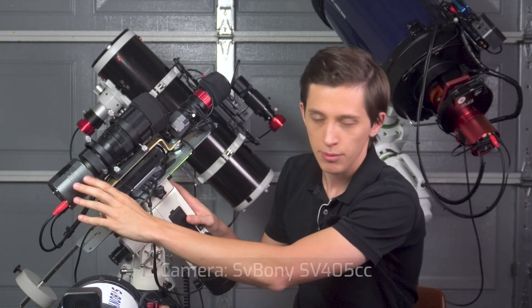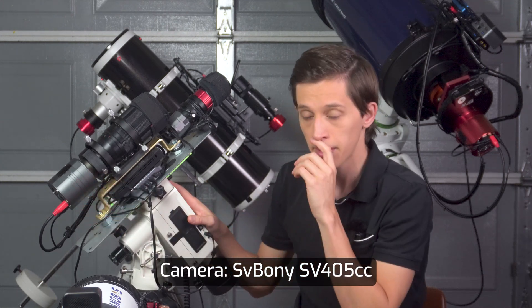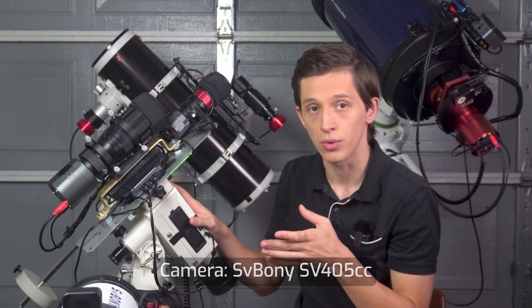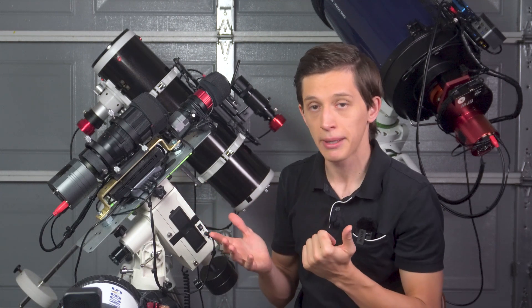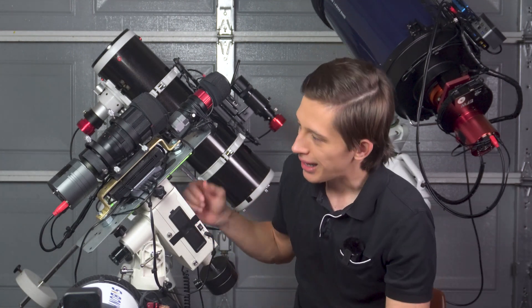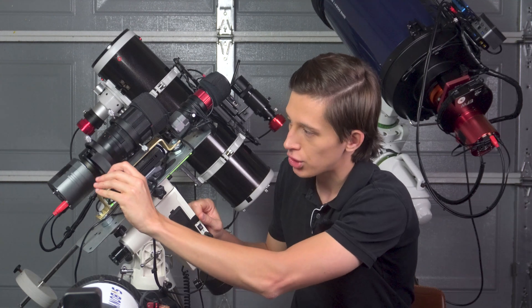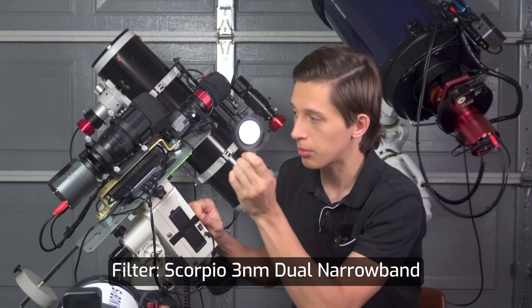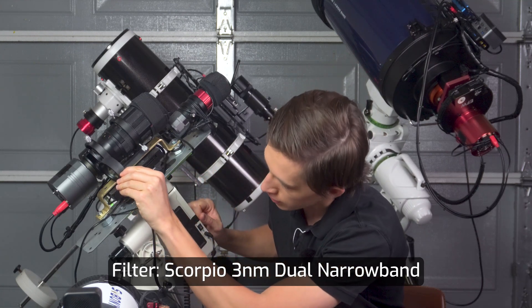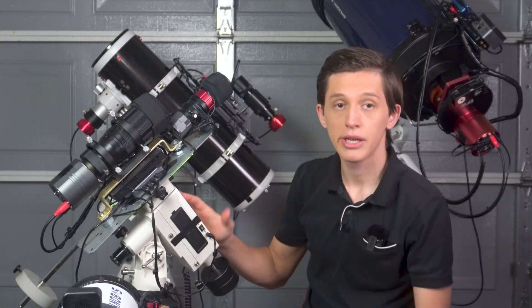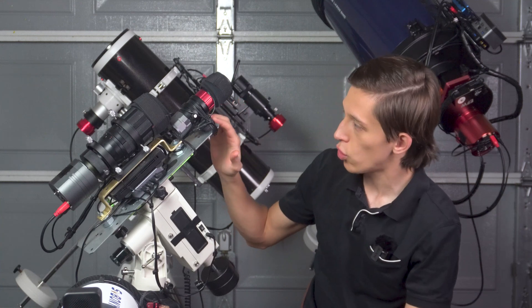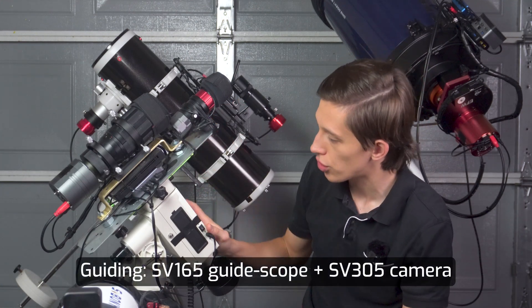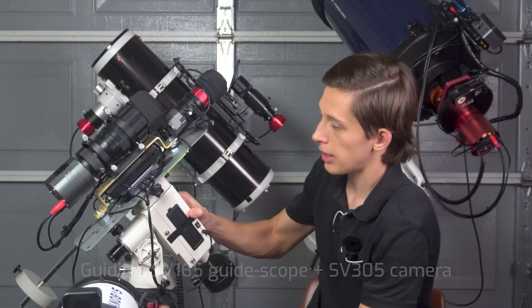Here I got SVBony SV405CC camera. Probably it's not an ideal choice for that rig in terms of the image scale but that's all I got for now. I also have a filter wheel and pretty much I take images in narrowband and this filter is Scorpio 3 nanometer dual narrowband filter. And then of course I also have the guide scope which is SV165, the camera is SV305. This is how everything looks like.